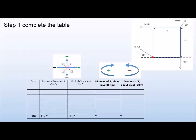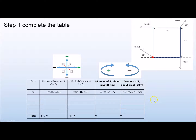Now we're going to actually start solving the force system. We'll bring all of our horizontal and vertical forces into two resultant components, and also calculate the total moment of all the forces. The best way to start is to create a table — that way you can see all your results, analyse what you've done, and easily spot any mistakes. The columns are: force, horizontal component, vertical component, horizontal moment, and vertical moment.